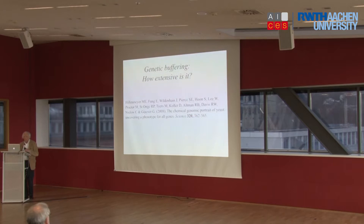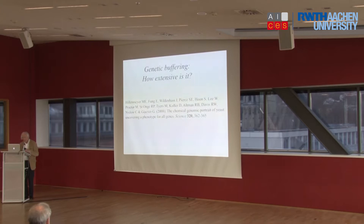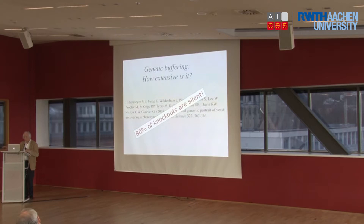How general is this? This is a beautiful study by Hillenmeyer and his colleagues in 2008, in which they looked at the 6,000 genes in the tiny unicellular organism yeast and knocked them out one by one to see what it did to metabolic and reproductive function. 80% of the knockouts were silent — no effect — until you stress the organism by removing one of its metabolites, at which point the regulatory mechanisms, just as in the pacemaker model, find another way of doing it with existing mechanisms.